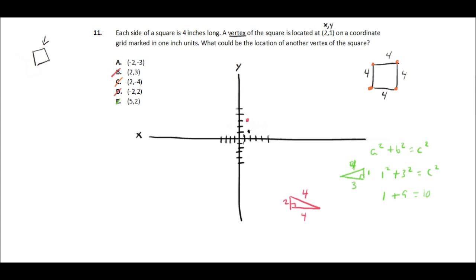If you go over negative 2 on the x, or negative 2 on the x-axis and then down to negative 3, that puts us right here. So could this be a vertex of the square? Let's see.